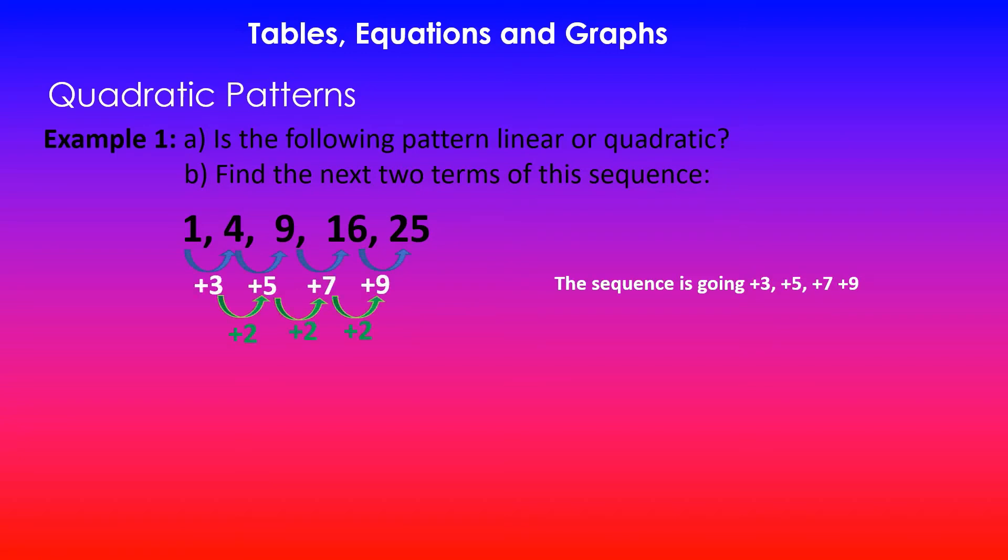We'll find the second difference, and here you can see that from 3 to 5 we're adding 2. Likewise from 5 to 7 we're adding 2. So there is a constant second difference. This confirms that the pattern is a quadratic pattern, and we can use this to find the next two terms of the sequence.